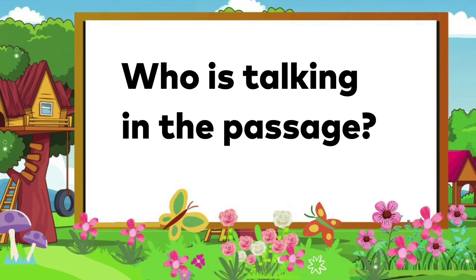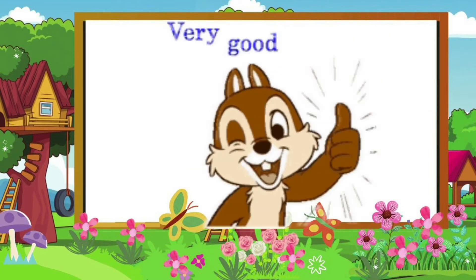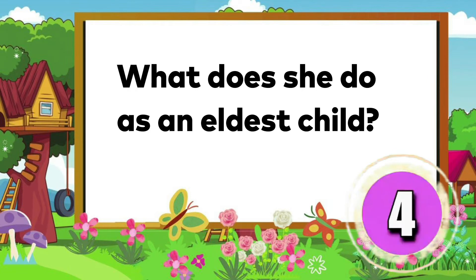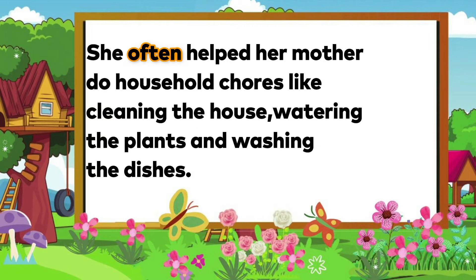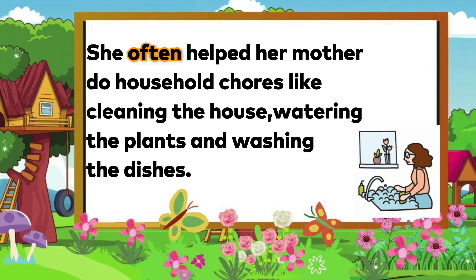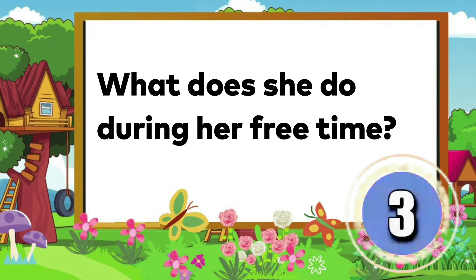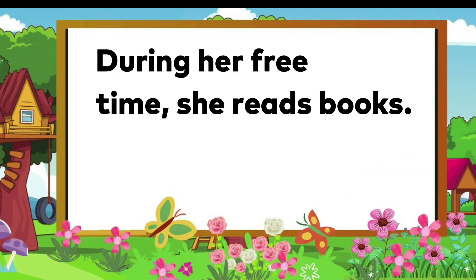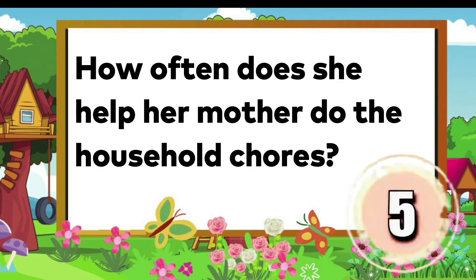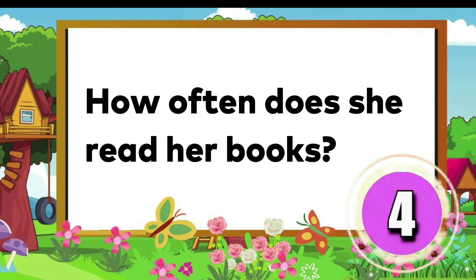Now let's answer the questions. Who is talking in the passage? Did you say Anna? Very good! Next, what does she do as an eldest child? That's right! As an eldest child, she often helped her mother do household chores like cleaning the house, watering the plants, and washing the dishes. Third question: what does she do during her free time? During her free time, she reads books. How often does she help her mother do the household chores? She often helps her mother do the household chores. How often does she read her books?